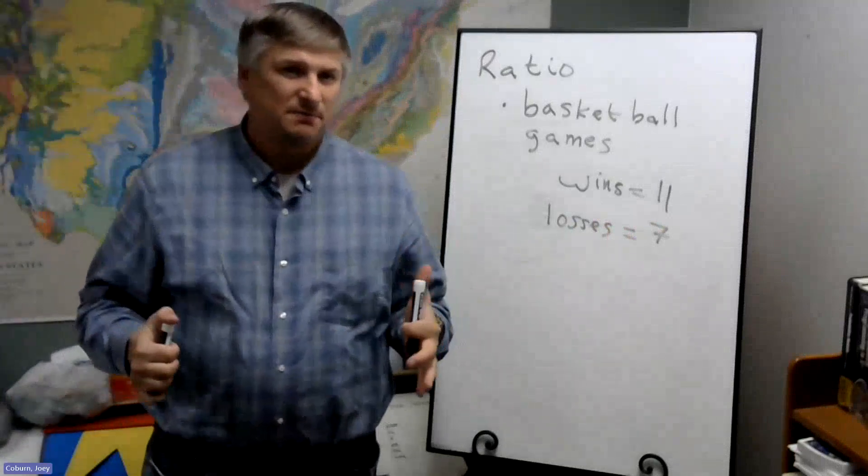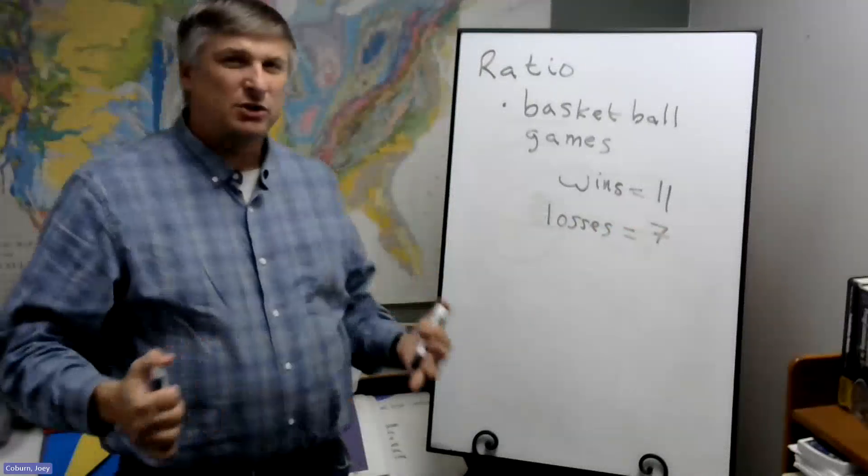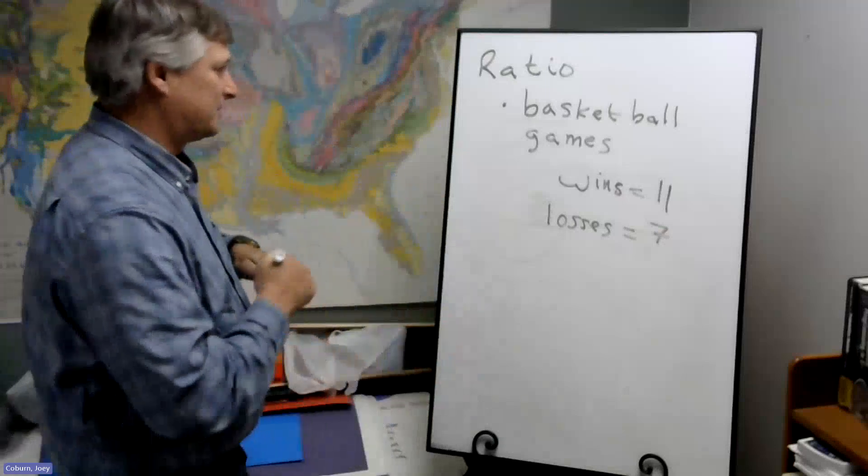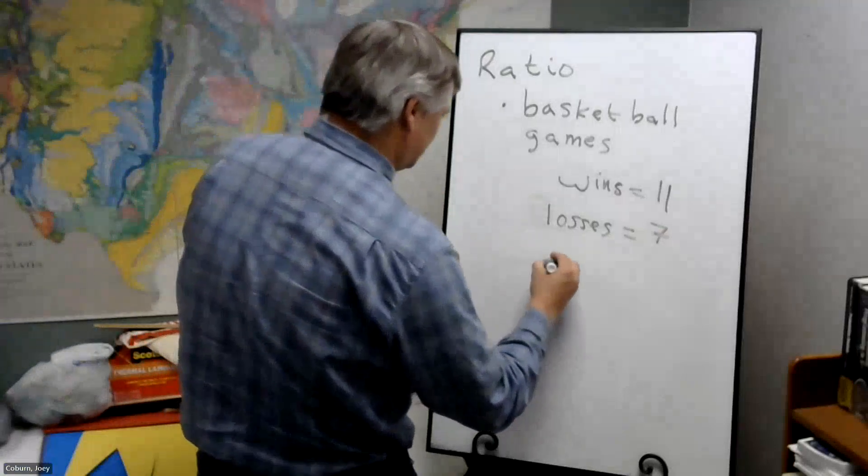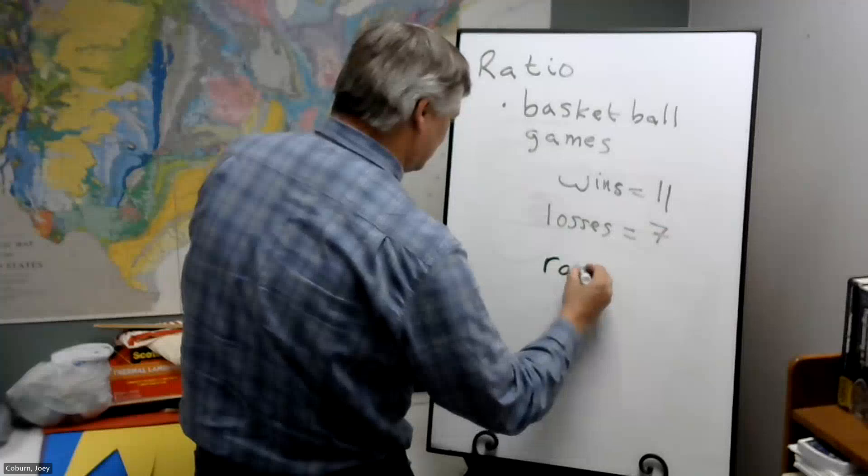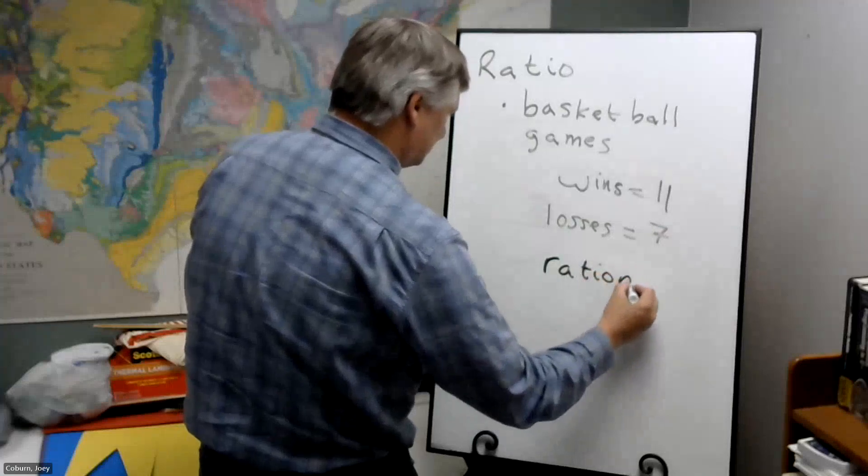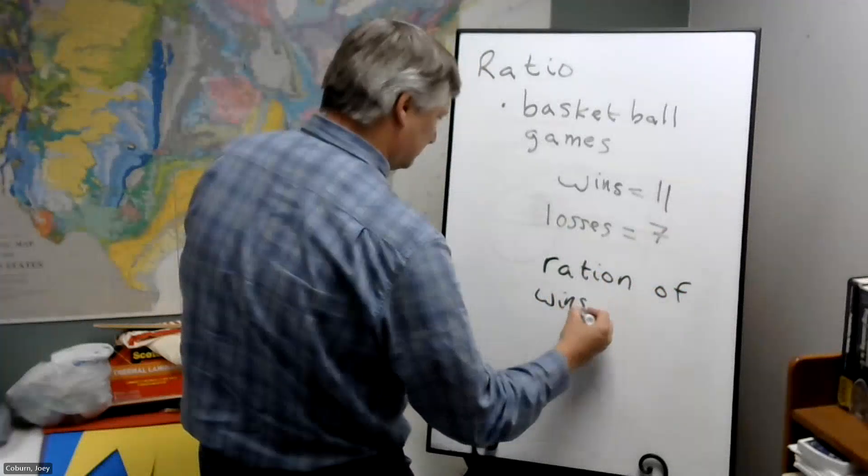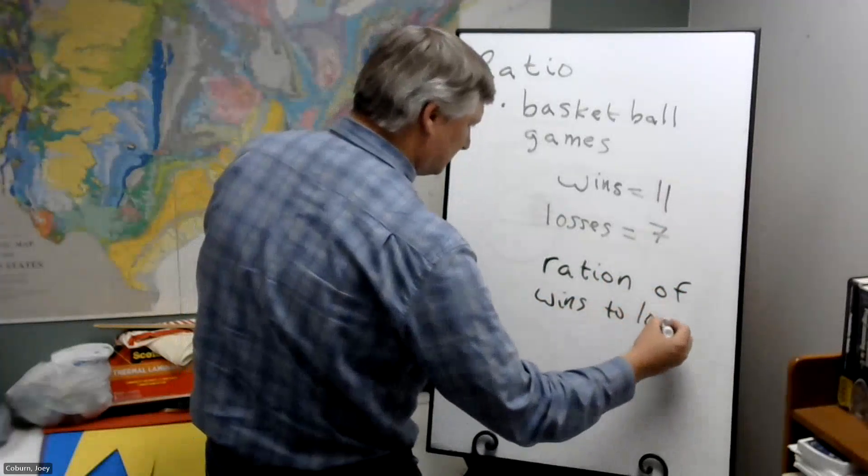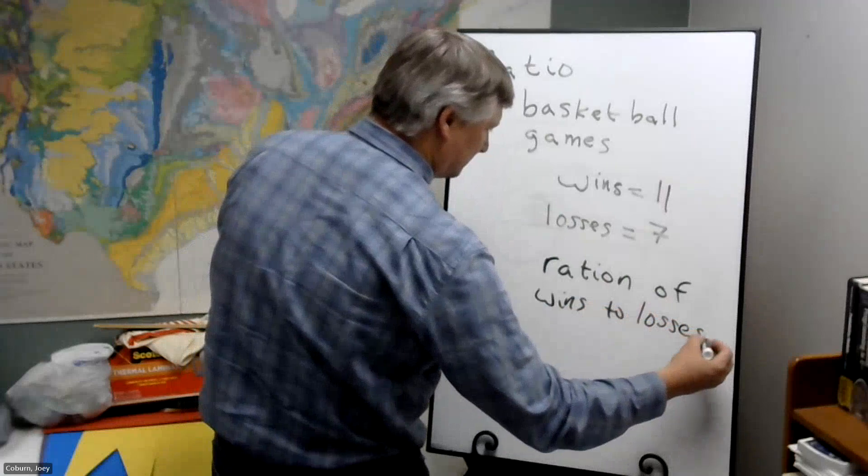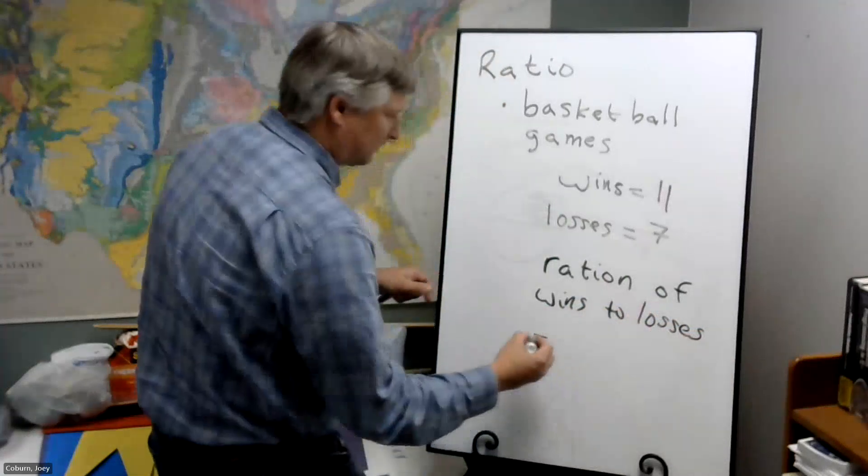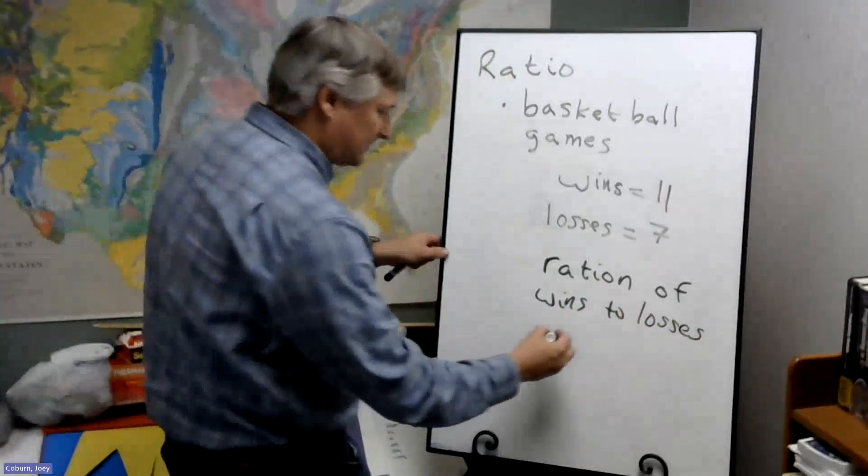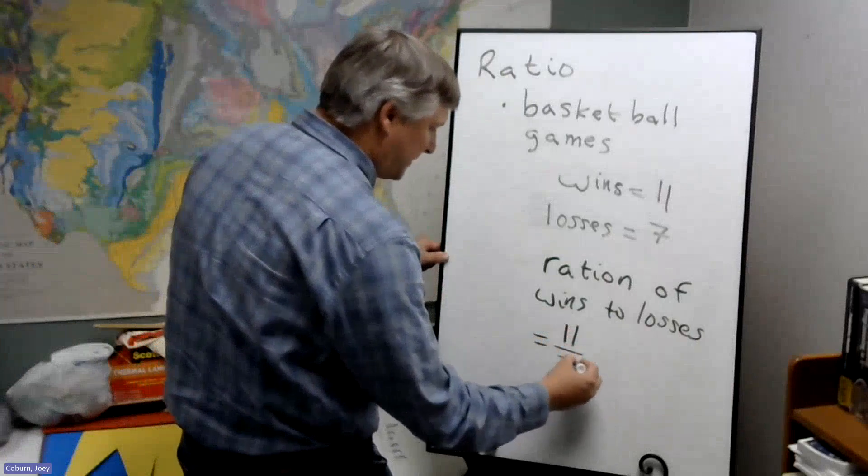So what we might say is this, the ratio of wins to losses. Well, we would write this as 11 over 7.